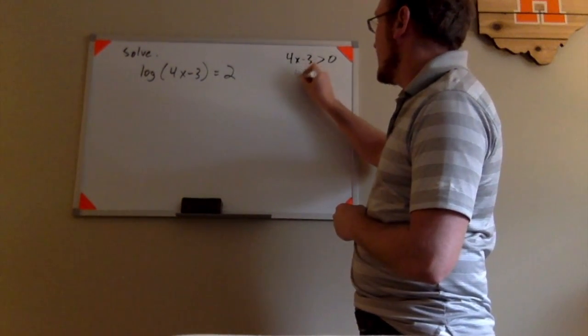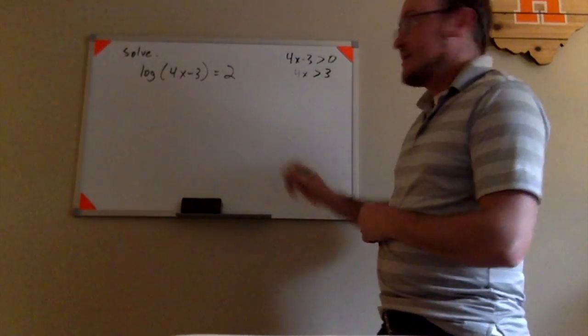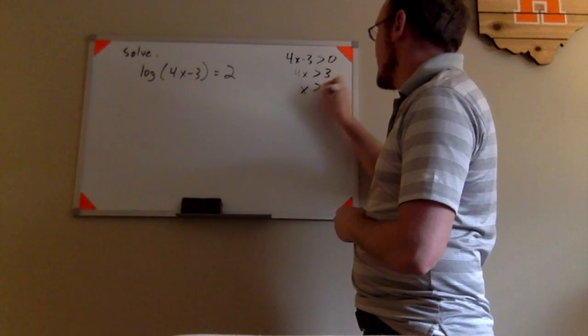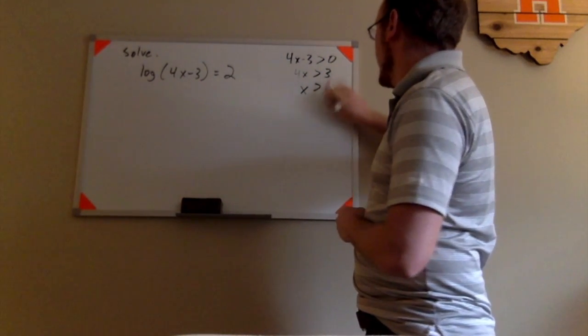Solving this inequality, I get that 4x is greater than 3, and dividing by 4, I get x has to be greater than 3/4.